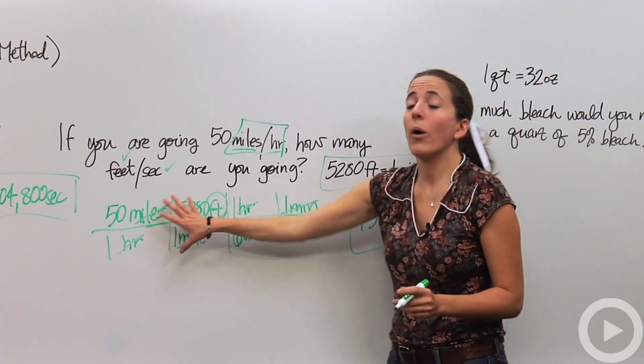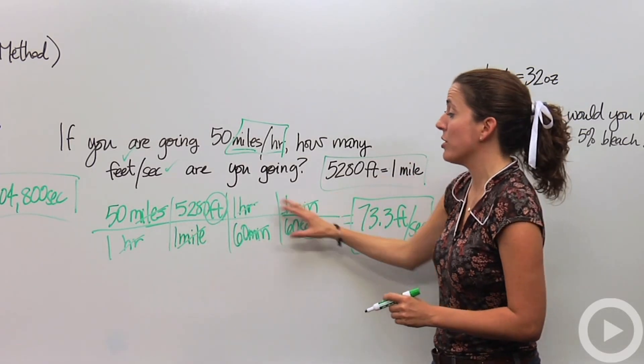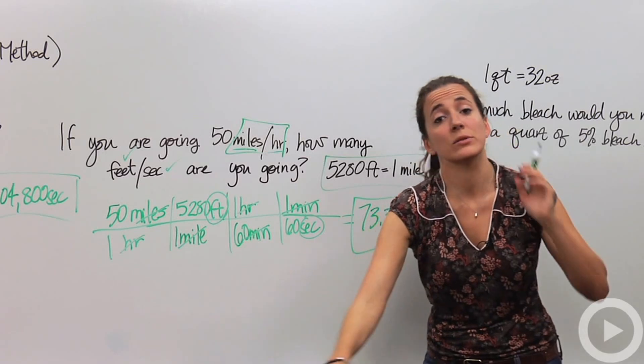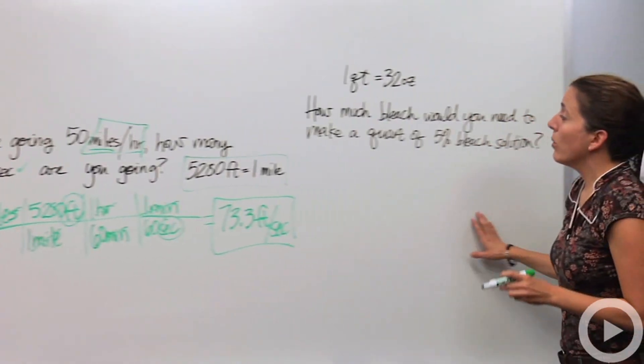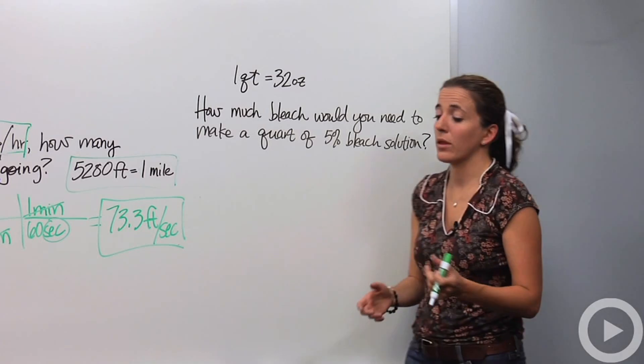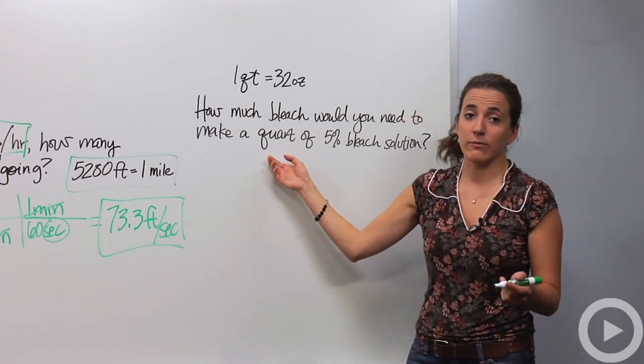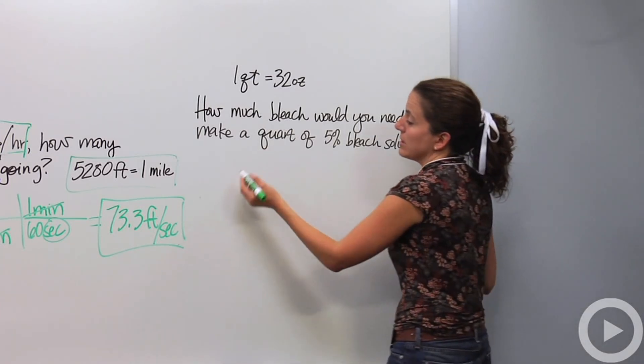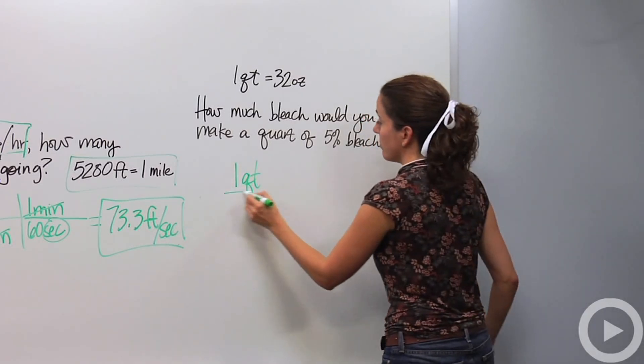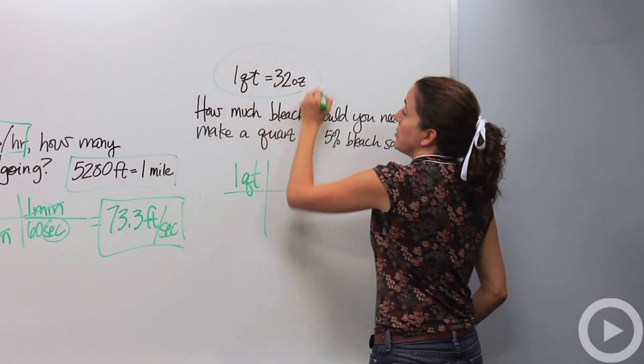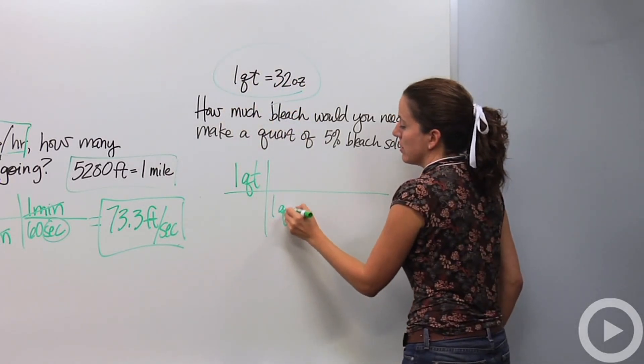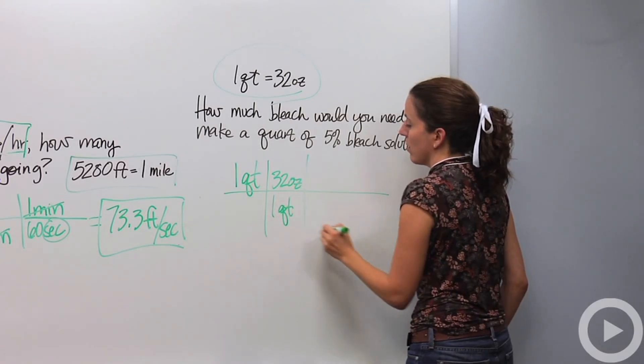Now notice the whole point of this is actually just to make sure our units all cross out and make sure that we're left with the units that we want. Let's do something that deals with chemistry. One question is, how much bleach would you need to make a quart of 5% bleach solution? So our given is, we want a quart of this. So I'm going to say our given is one quart, and always start with your given. So I know this unit is one quart is 32 ounces, so I'm going to say one quart is 32 ounces.